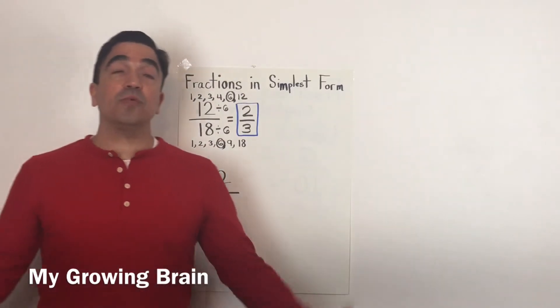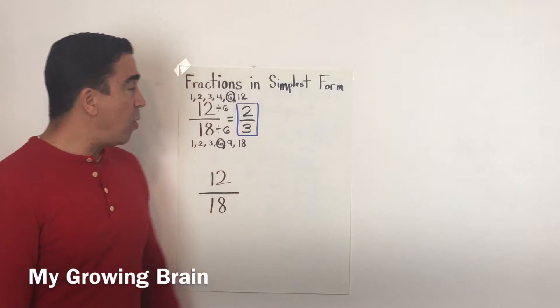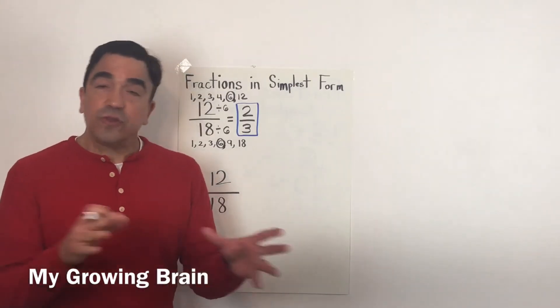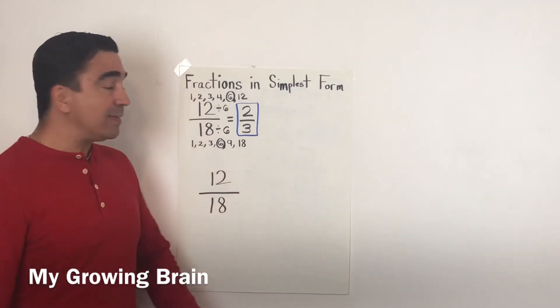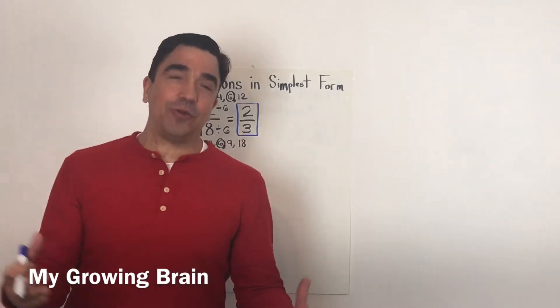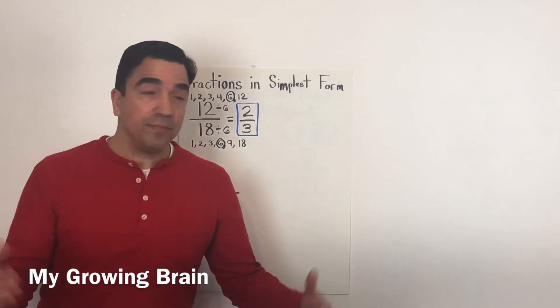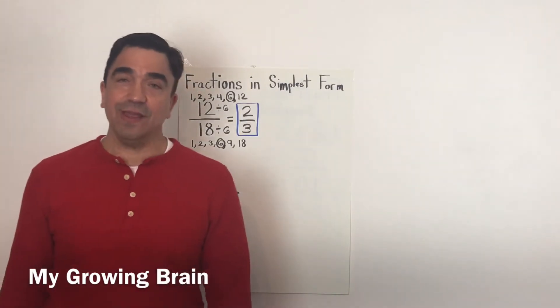Well, sometimes we have a hard time, and we may miss a factor, or we may do something wrong, and it can mess up our whole problem. So I'm going to show you another strategy on how to find the simplest form for 12/18.